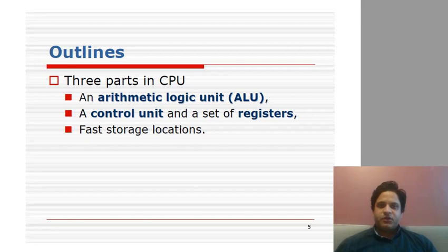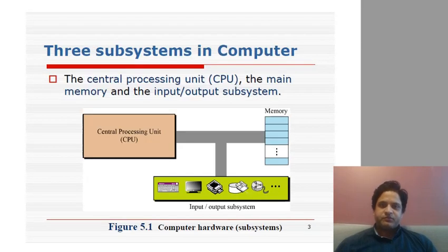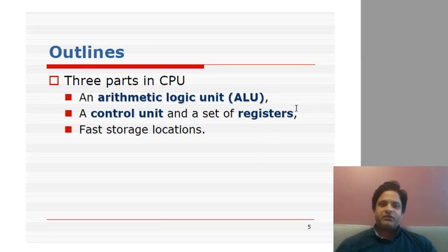The three main parts of the CPU are: the Arithmetic Logic Unit, also called the ALU; the Control Unit, which controls all operations between the memory and the CPU, or between the input/output devices and the CPU; and the third is registers. Registers are fast memory locations inside the CPU for storing data temporarily while the CPU works on it. Within the CPU we also have a small internal memory in the form of registers, which are faster than RAM.